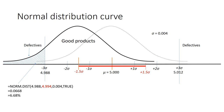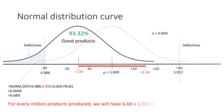Had the process mean shifted to plus 1.5 standard deviations, the right-hand tail would be outside the upper specification limit and the area would also be 6.68%. So only one side can be outside the specification limit at a time, giving 6.68% defective units, meaning the proportion of good units is 93.32%. For every one million products produced, there will be 66,807 defective units. Since the tolerance limits are plus or minus three standard deviations apart, we call this a three sigma process.